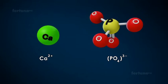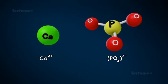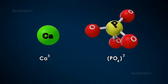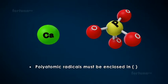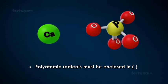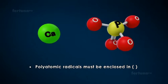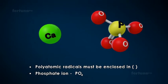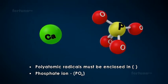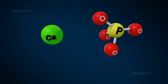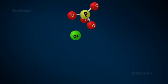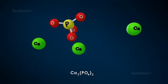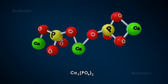Write the cation on the left and the anion on the right. Criss-cross the valences. Polyatomic radicals must be enclosed in parentheses. The phosphate ion is a polyatomic radical, meaning it must be enclosed in parentheses with the subscript written outside. The final formula of calcium phosphate is written as Ca3(PO4)2.